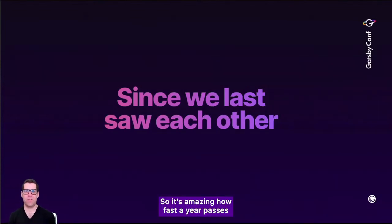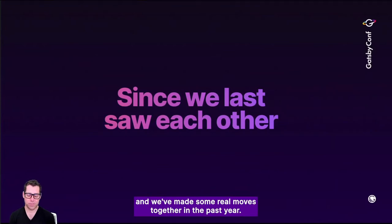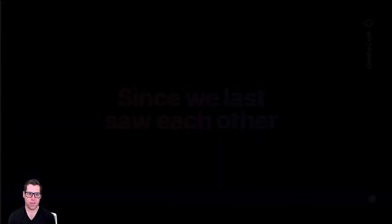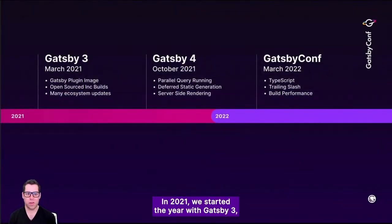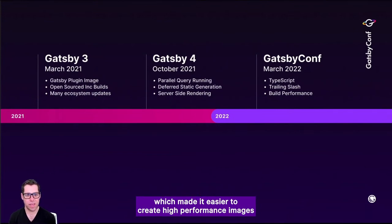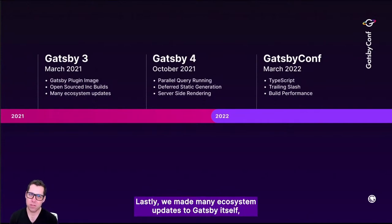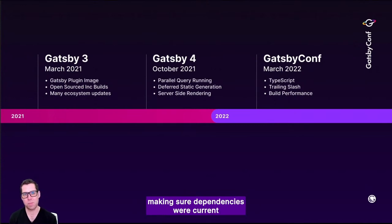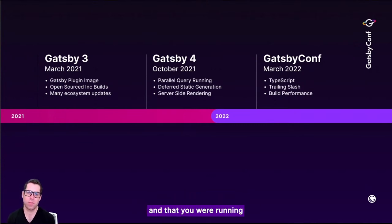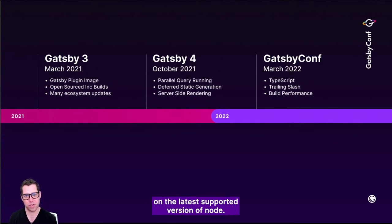It's amazing how fast the year passes, and we've made some real moves together in the past year. In 2021, we started the year with Gatsby 3, which made it easier to create high-performance images and sped up builds wherever you run them by open sourcing our incremental builds feature. We also made many ecosystem updates to Gatsby itself, making sure dependencies were current and that you were running on the latest supported version of Node.